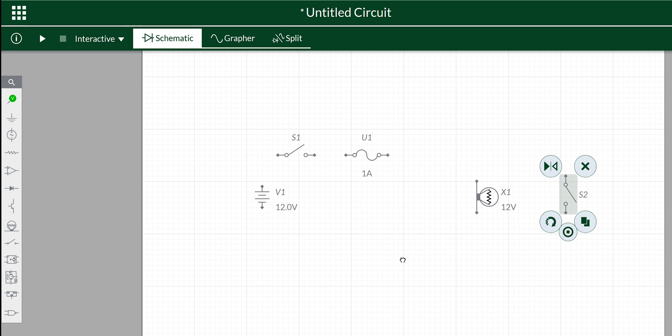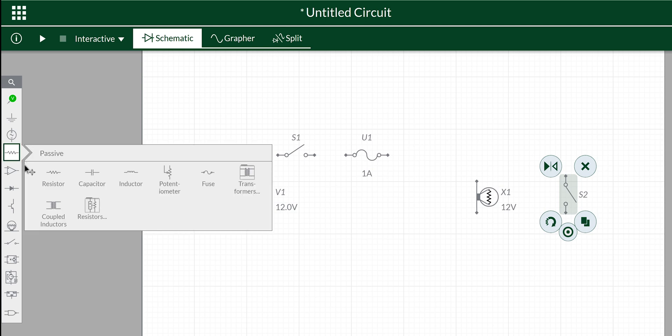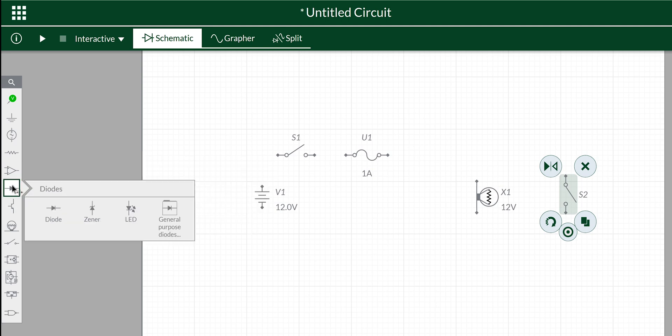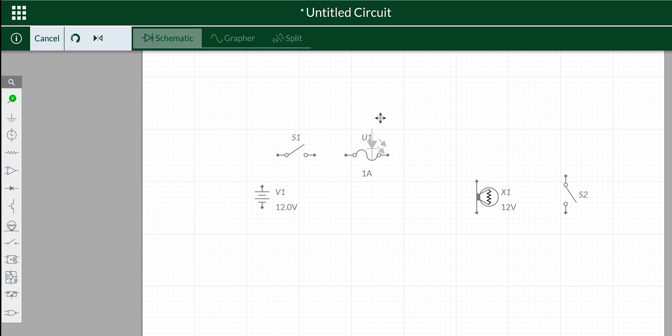Now we just need to join it all up with wires. But don't forget of course we need our LED to show our blown fuse. So we'll go into resistors. I believe they're in here. No they're not actually. They're over here. Here they are. Go into diodes and we'll grab an LED. And we'll change the orientation of our LED. There we go.